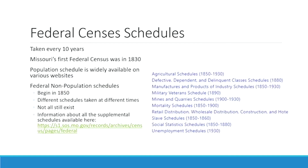Federal census schedules are taken every 10 years. Missouri first shows up on the federal census in 1830. The population schedule is widely used and widely available on various websites, so we do not plan to put the federal population schedule in our online database. The federal non-population schedules, however, are not as widely available — they begin in 1850 and different schedules were taken at different time periods. Unfortunately, not all of these still exist. The unemployment schedule from 1930 in particular would be of great interest to people whose ancestors lived through the Great Depression, but it no longer exists.